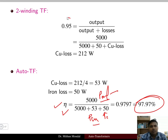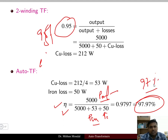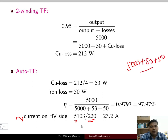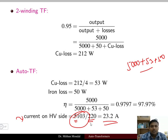The current on the high voltage side (220 volt) can be computed from the power on that side: 5000 + 53 + 50 = 5103 watt. Therefore the current = 5103 / 220 = 23.2 ampere on the high voltage side of the transformer.